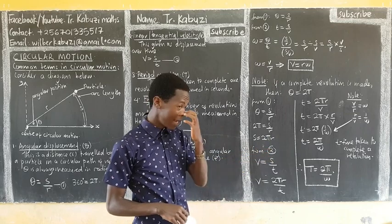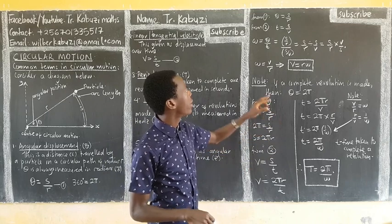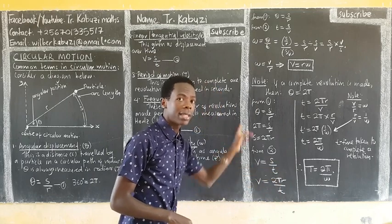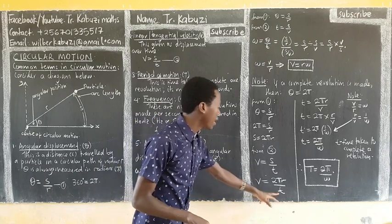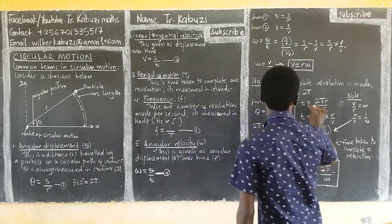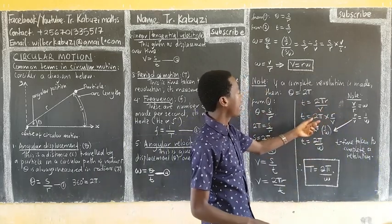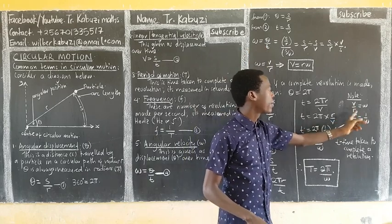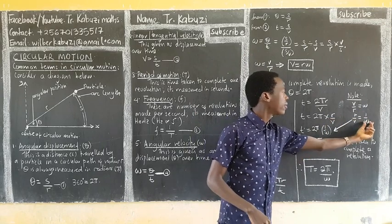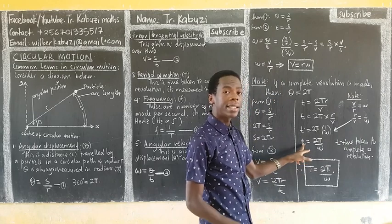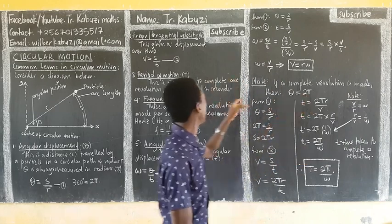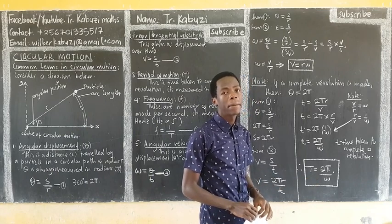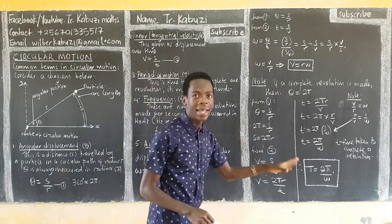From equation two, putting in S equals 2πR, the distance for a complete revolution is the circumference 2πR. Making T the subject gives T equals 2πR over V. Now I need R over V in terms of omega. Since omega equals V over R, then R over V equals 1 over omega. Substituting, T equals 2π over omega. This T is the time for a complete revolution, which is the period — so the period T equals 2π over omega.